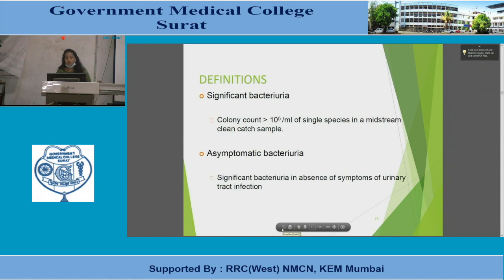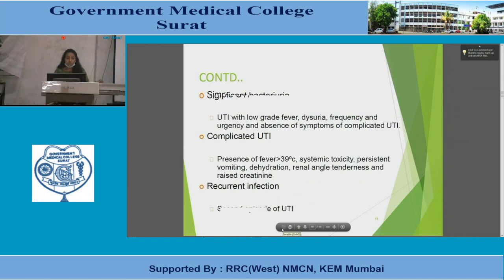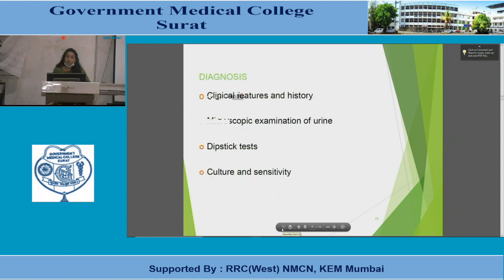Significant bacteriuria is defined as a colony count greater than 10⁵ per mL of a single species in a midstream clean catch sample. Asymptomatic bacteriuria is significant bacteriuria in the absence of symptoms. Simple UTI mainly presents with low-grade fever, dysuria, frequency, and urgency without symptoms of complicated UTI. Complicated UTI is defined by high-grade fever (>39°C), systemic toxicity, persistent vomiting, dehydration, renal angle tenderness, and raised creatinine. Recurrent infection means repeated episodes.